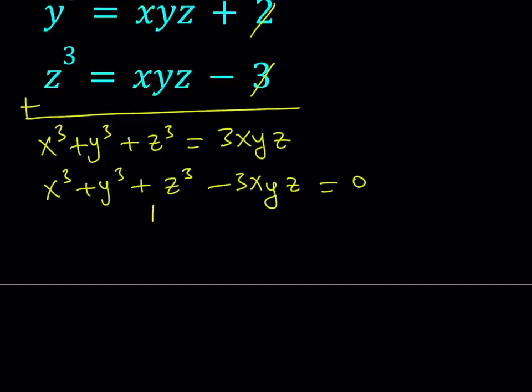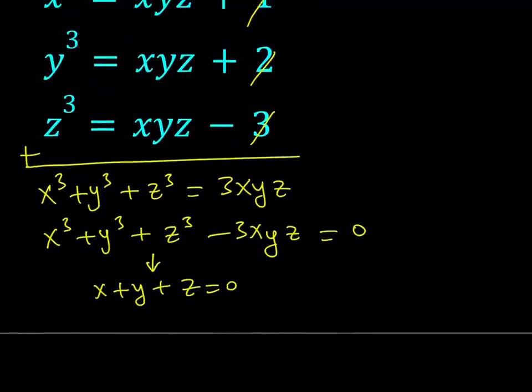So this implies that x plus y plus z is equal to 0, from which you can get x plus y in terms of z, so on and so forth. But is that going to help you with the system? That's a good question to ask. So one of the methods could be this one, but is that going to lead anywhere?